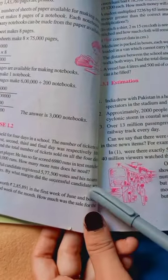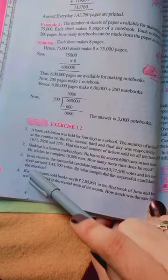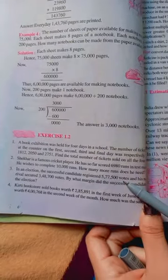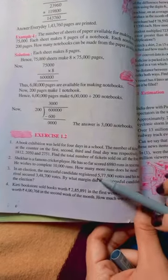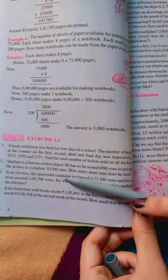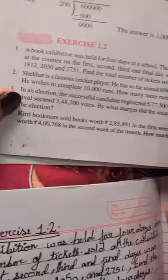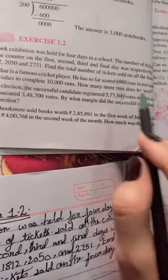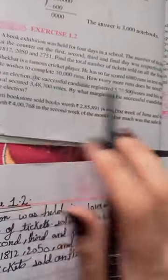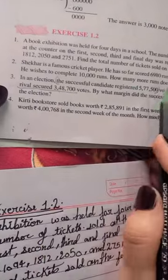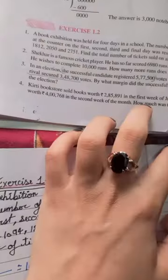So it has said that the first candidate has 5 lakhs 77,000 and 500 votes and the rival has 3 lakhs 48,000 and 700 votes. So to find the margin by which the first one won, we need to subtract.